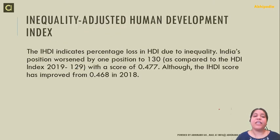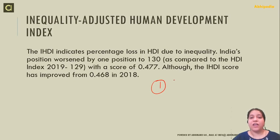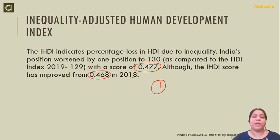The Inequality Adjusted Human Development Index denotes the percentage loss in human development due to inequality. India's score on this index is 0.477, which has risen from 0.468. This means we still need to work on reducing inequality, as it is pulling down the overall human development score.